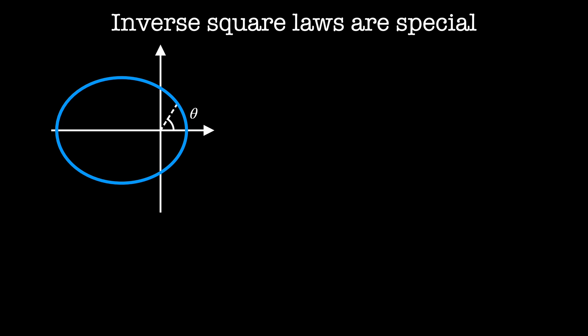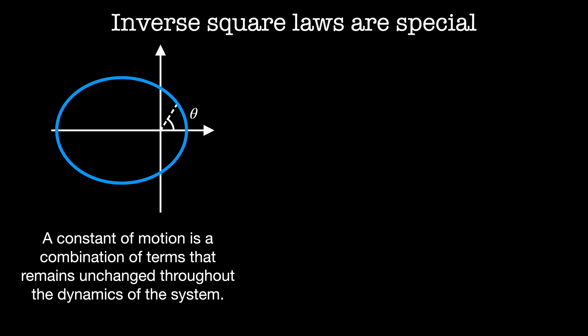But what is a constant of motion? A constant of motion is a combination of terms that remains unchanged throughout the dynamics of the system. Previously, we used Noether's theorem to look at the symmetries of the Lagrangian as a way to derive conserved quantities. Here we're going to take a more Hamiltonian approach and look at some constants within the phase space of our system. To derive this particular constant of motion, we'll basically be doing algebra to solve for a first integral of the system.